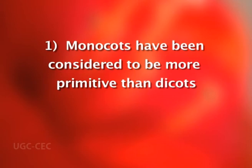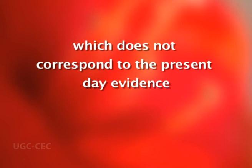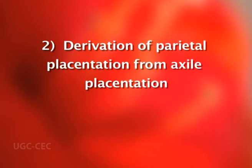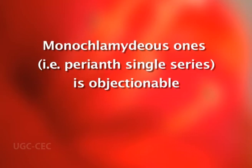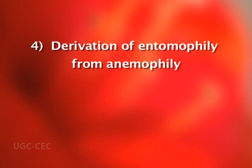Now the demerits of Engler and Prantl's system: first, monocots have been considered more primitive than dicots, which does not correspond to present-day evidence. Second, the derivation of parietal placentation from axile placentation is objectionable. Third, derivation of dichlamydeous flowers (perianth in two series) from monochlamydeous ones (perianth in a single series) is objectionable. Fourth, the derivation of entomophily from anemophily is also objectionable.